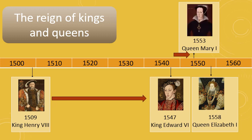Mary I spent even less time on the throne than her brother. She was queen for only five years before she also died and Queen Elizabeth I began her reign as queen. Looking at the position of the images, we can clearly see the time each monarch spent as ruler.